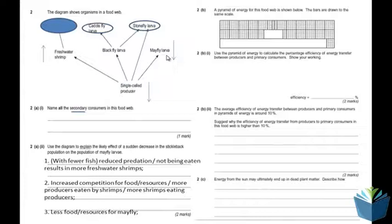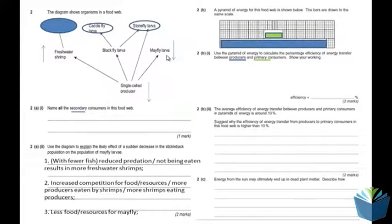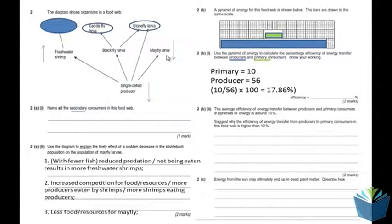Question 2b: the pyramid of energy for this food web is shown. The bars are drawn to the same scale. Use the pyramid to calculate the percentage efficiency of energy transfer between producers and primary consumers, showing your workings. The producers are in blue and the primary consumers in green. Using the values from the scale, primary consumers equal 10 and producers equal 56. So it's 10 over 56 times 100, giving a percentage efficiency of 17.86%. The mark scheme allows anything between 16.5 and 18.5.